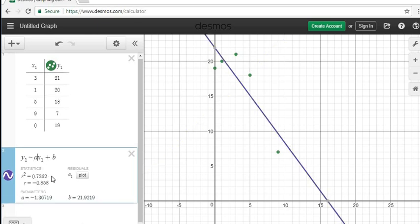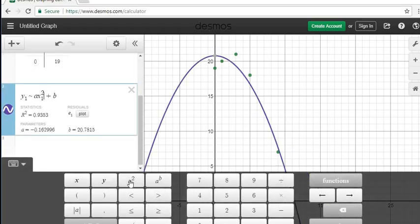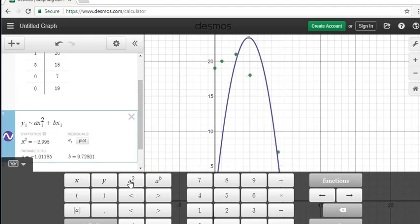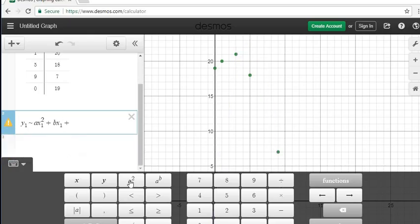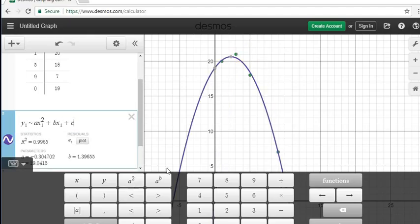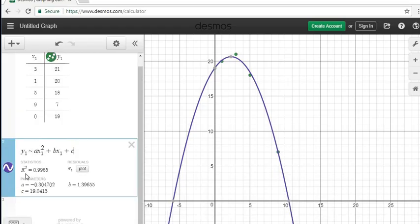Let's look at what a quadratic regression model looks like now. I'm going to do ax1 squared plus bx1 plus c. Now if you look at this model, you can see that this one more accurately depicts this. I'm going to close the keypad and you can see that R-squared is 0.9963.